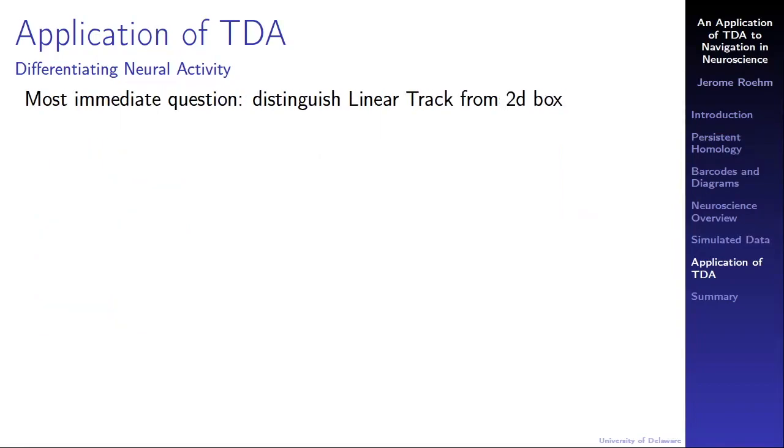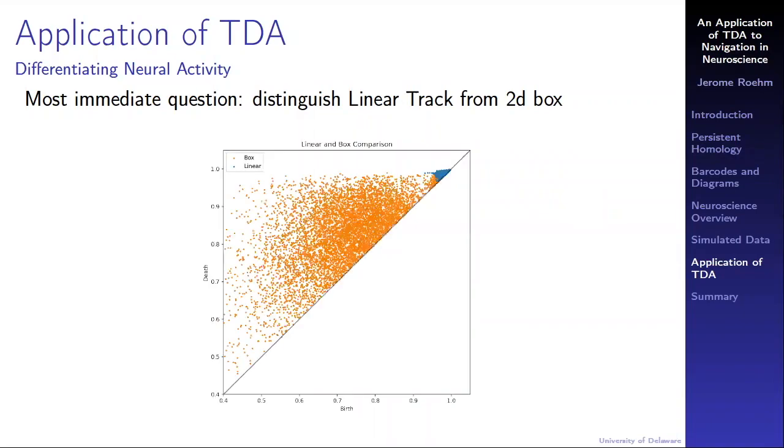After all those pretty pictures, let's remember the motivating question. Given a pile of firing times for some neurons and nothing else, can we differentiate between noise and signal, and can we offer any insight to what kind of environment the animal may be thinking about? The most immediate and common question for differentiating neural activity is distinguishing between a linear track and a 2D box. When we overlay the persistence diagrams for the 1D holes, the answer is pretty clear. The topological signatures for the data collected from thinking about wandering a 2D box and thinking about traversing a linear track are very different. One can do fancy statistics on the set of points in the diagrams or use them as an input for a machine learning algorithm, but I find this picture compelling enough to give me confidence in the technique.